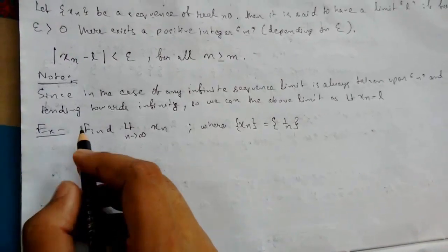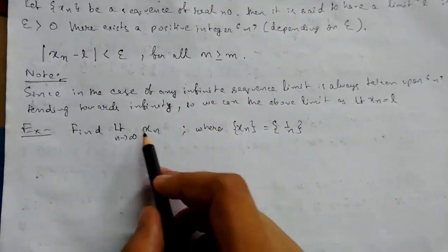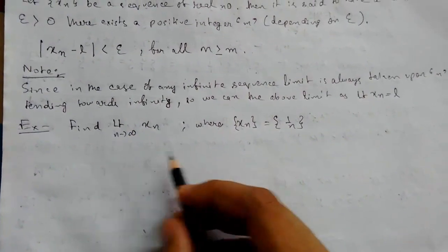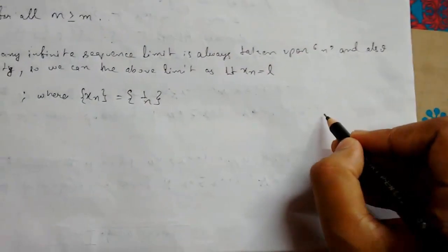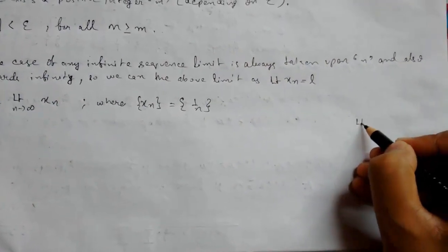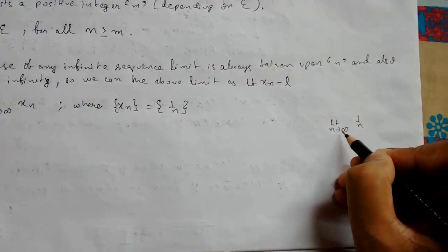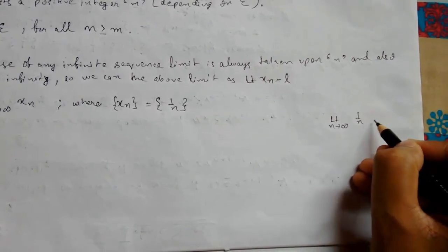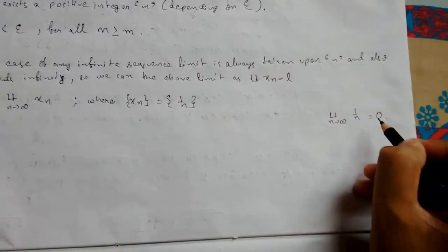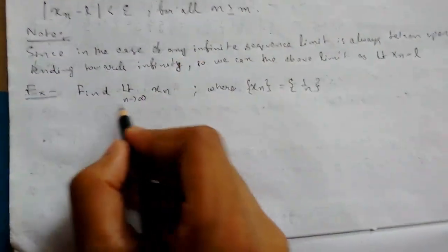To calculate the solution, first we need to calculate the rough answer. So: limit as n tends to infinity of 1/n. Putting the value infinity in, it will give zero. So this is our L, L = 0.